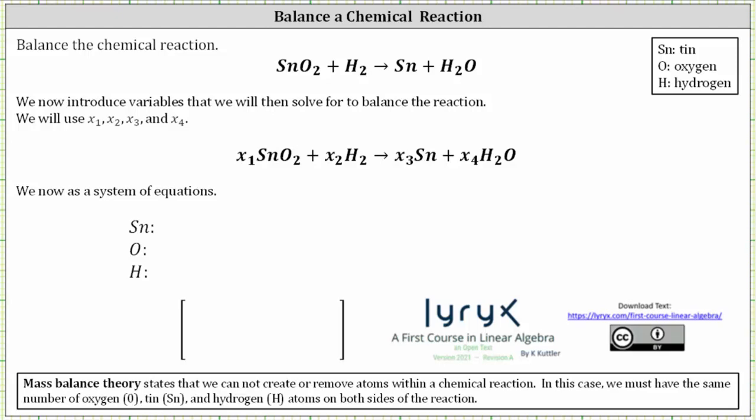For example, we have two atoms of oxygen on the left and only one on the right. Because the reaction has four elements or compounds, we introduce four variables. I will use x sub one through x sub four, which become the coefficients in the chemical reaction. And now we write a system of equations for each of the three atoms.